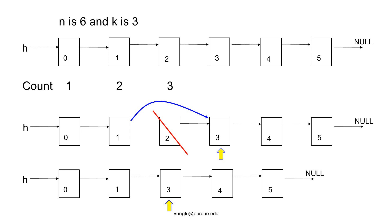Start from the first node, we count 1, 2, and 3. The node whose value is 2 is deleted. To delete this node, modify the link in front of this node to bypass this node. Please be careful that we need to mark where counting will continue. This up arrow marks where counting will continue. The bottom of this slide shows the new linked list after one node has been removed.